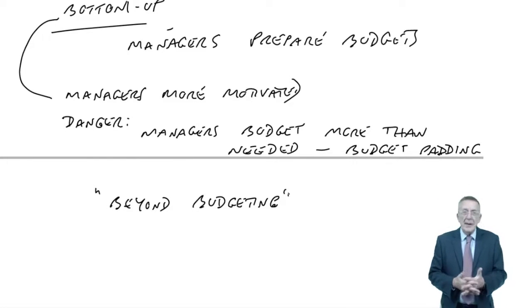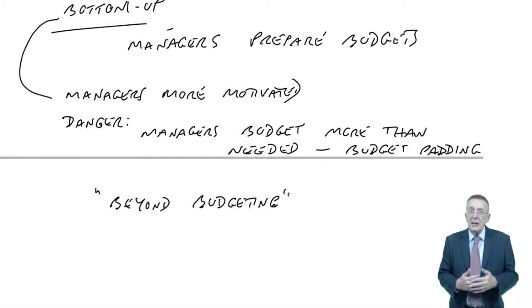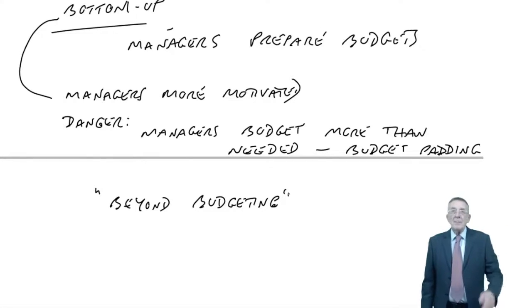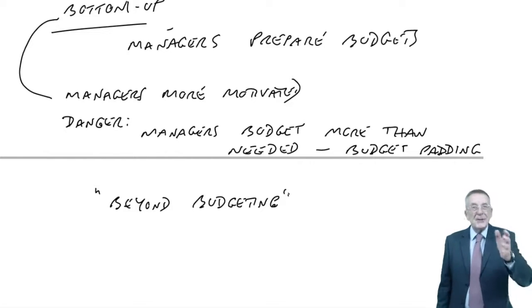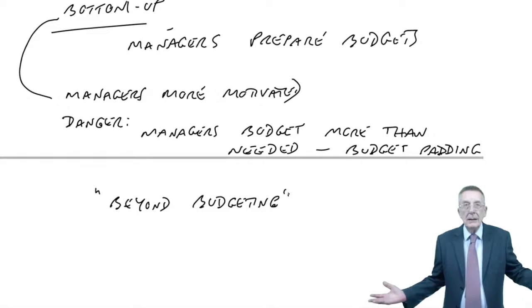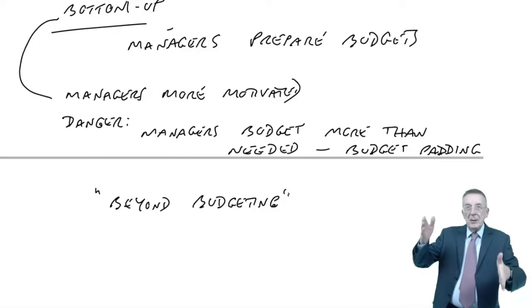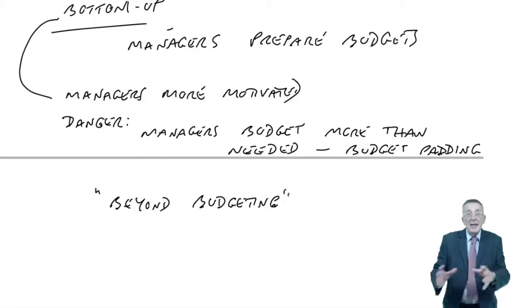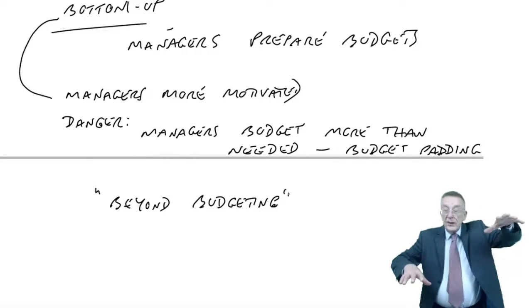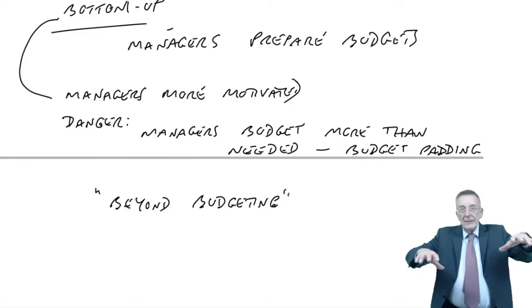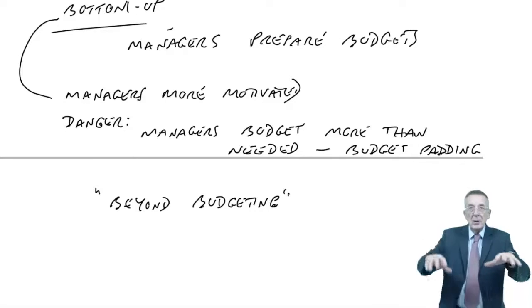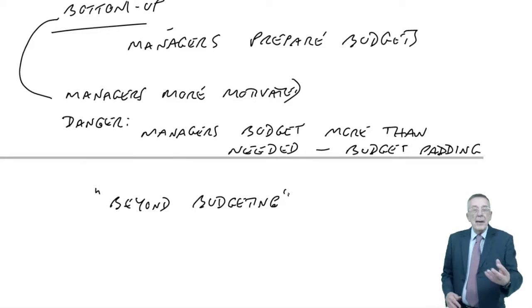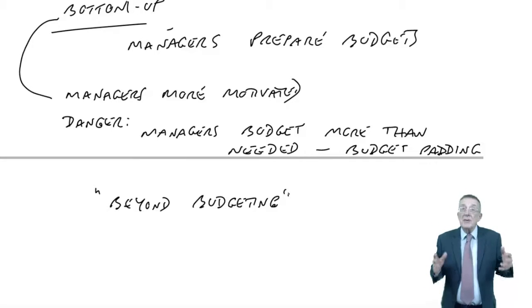Some people say, do we really get much benefit from it? We want people to have targets, we want people to be motivated, we want ways of measuring people. But what about this? Instead of measuring them against a budget, which is probably wrong anyway, wouldn't it be better to measure them against other people doing similar work? For instance, suppose you're a bank where we've got lots of separate offices and they're all doing the same thing. Well, why don't we measure the offices against each other?